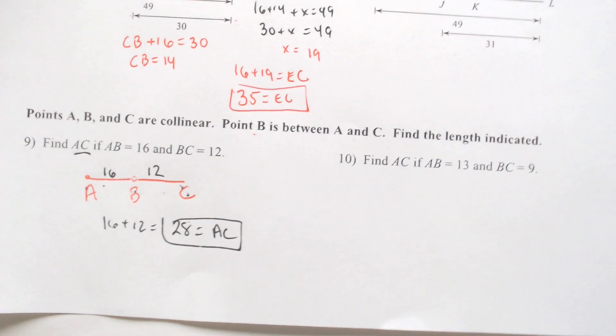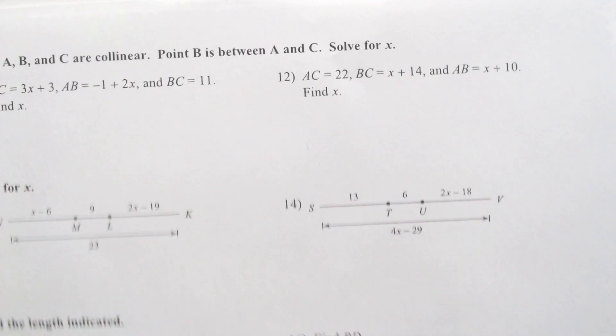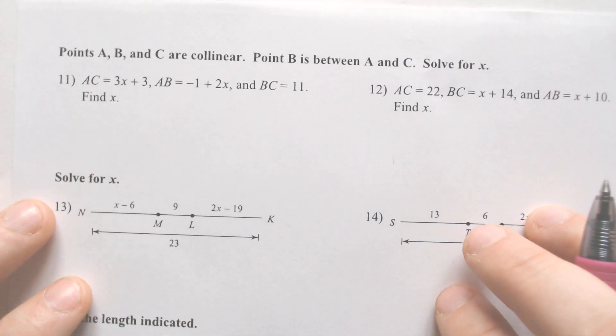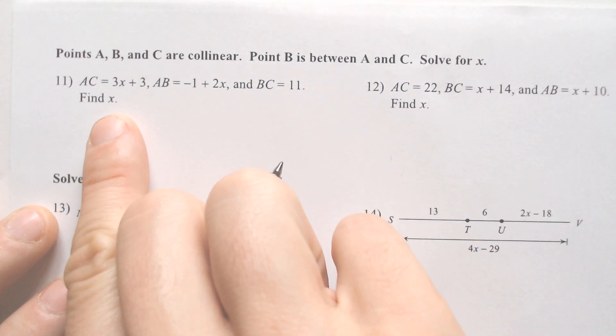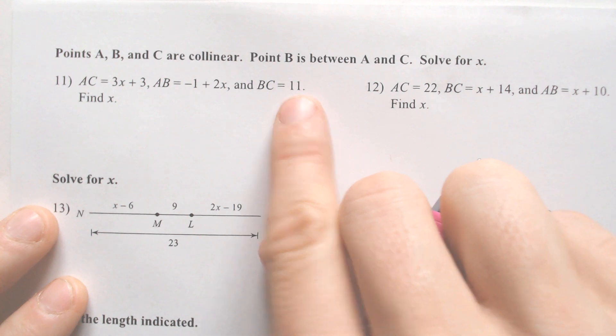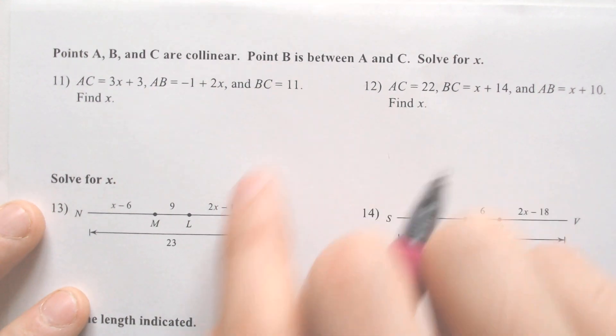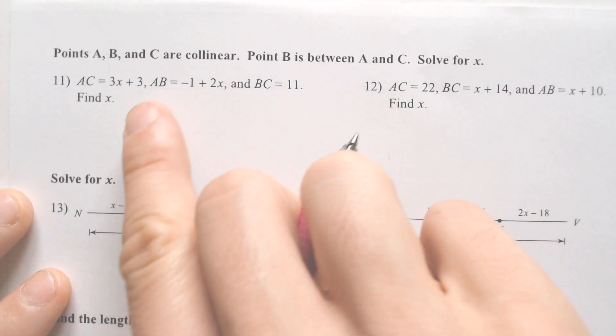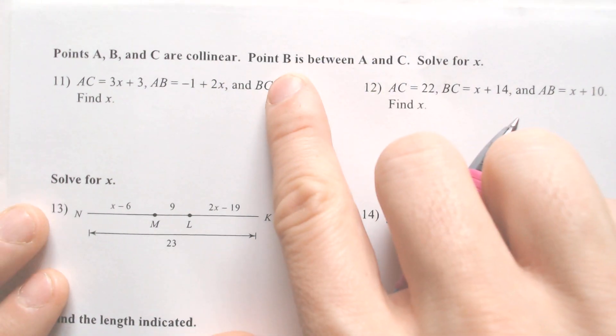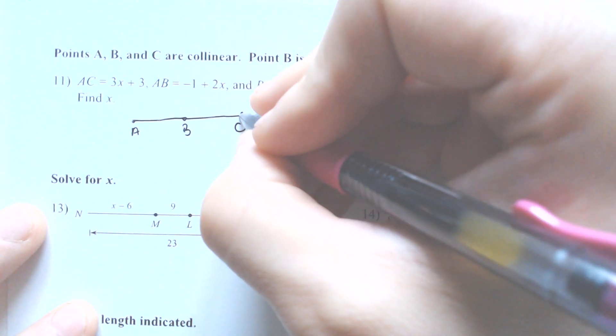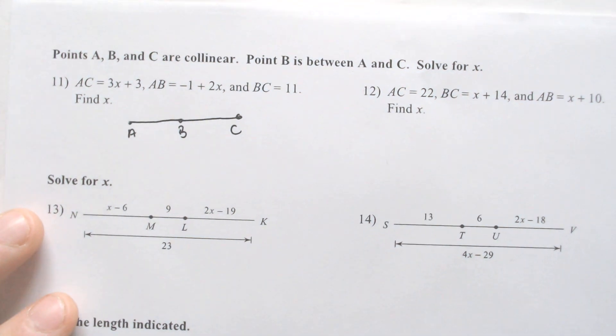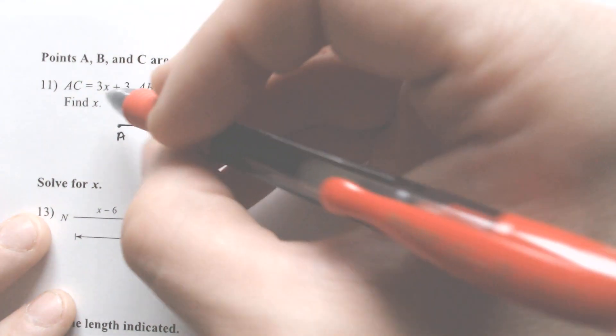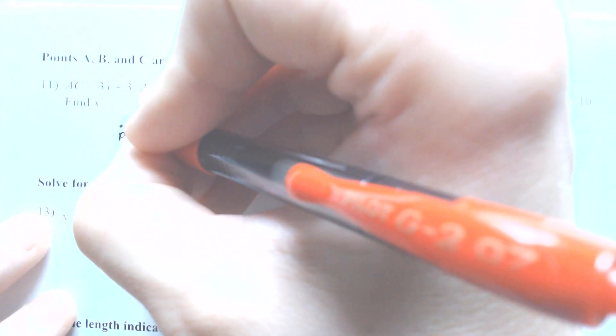We are about to approach the harder problems. Here we have three different things, and they're all with Xs. This is going to be a big upgrade from the previous problems. A and C, B is still in between. We got A, we got B in between. Be careful because sometimes they put a different letter in between A and C that's not B.